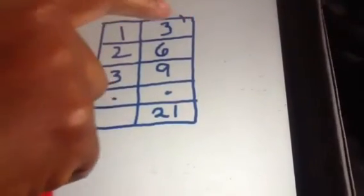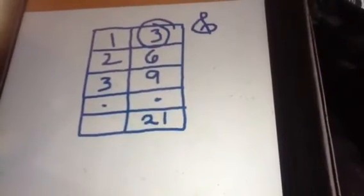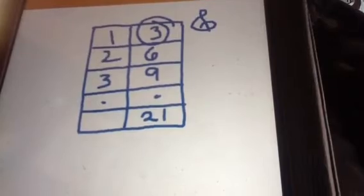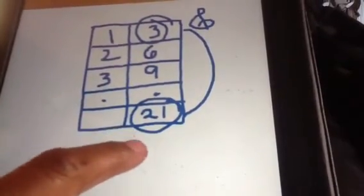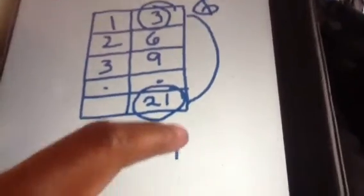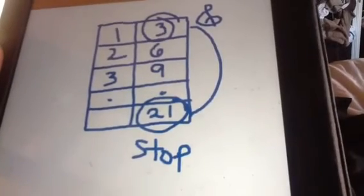We're going to sing the 3 song. I remind myself by making a little musical note. So we're going to stop when we get to the bottom number, which in this problem is 21.